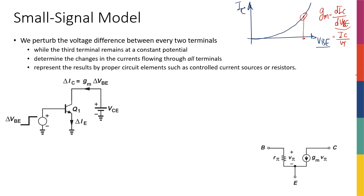So we saw two different behaviors: exponential and linear. This means that whenever we deal with a transistor-based circuit, we have to perform two different analyses. First, a DC or biasing analysis to find the operating point — which tells us how well-fitted the transistor is for amplification. Then, once we know our operating point on the curve, we perform a small signal analysis to find out, for example, how a five-millivolt perturbation at the input translates into current and voltage changes at the collector and output.